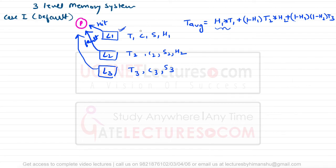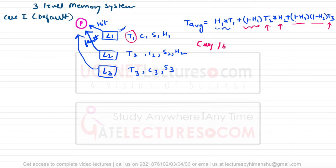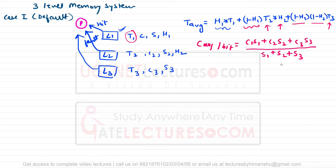In that formula: h1×t1 is the probability of a Level 1 hit times its access time; (1−h1)×h2×t2 is the probability of a Level 1 miss but Level 2 hit times t2; and (1−h1)×(1−h2)×t3 is the probability of missing both L1 and L2, so we access Level 3. The average cost per bit is: C_avg = (c1×s1 + c2×s2 + c3×s3) / (s1 + s2 + s3), i.e., total cost divided by total size.